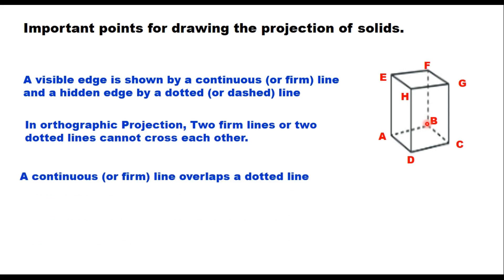The third rule is that a continuous line overlaps a dotted line. For example, when a square prism is placed on the horizontal plane, the top face ABCD and bottom face EFGH overlap when viewed from the top. The top face is visible and the bottom face is hidden, so EF is a continuous line and AB is a dotted line — in projection, only EF is shown, overlapping AB. Similarly, EH overlaps AD, and GH overlaps CD.